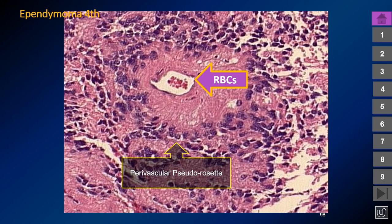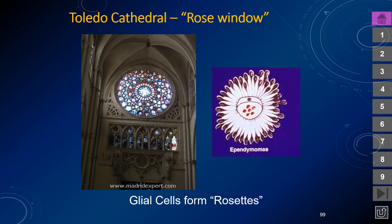Ependymomas are diagnosed histologically by the formation of perivascular pseudorosettes — not neuronal rosettes. The cells are arranged in a circle with cellular processes heading toward the vessel lumen, similar to a rose window pattern. These perivascular pseudorosettes represent the arrangement of ependymal glial cells surrounding a vessel.